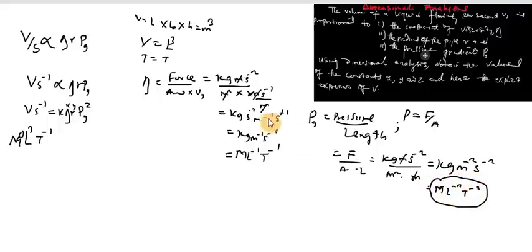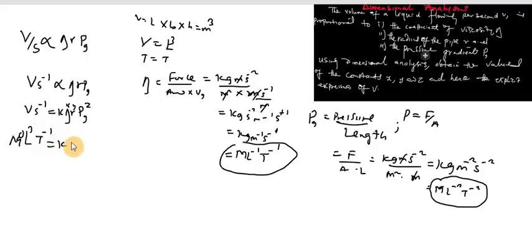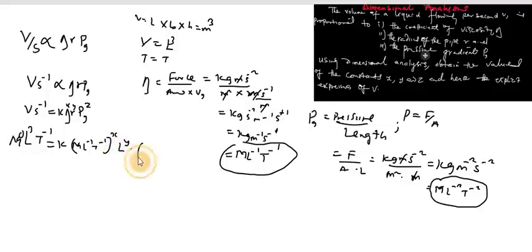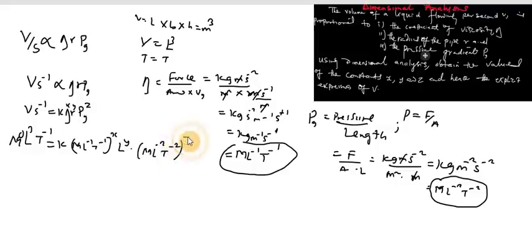Now substituting all dimensions into our equation, we have: L³T⁻¹ equals K times (ML⁻¹T⁻¹)^X times (L)^Y times (ML⁻²T⁻²)^Z. Here R is a measurement of length so its dimension is simply L to the power Y, and the pressure gradient dimension ML⁻²T⁻² is raised to the power Z.